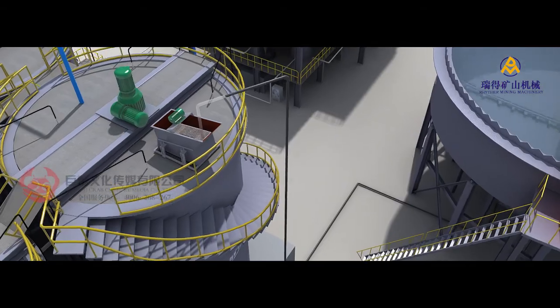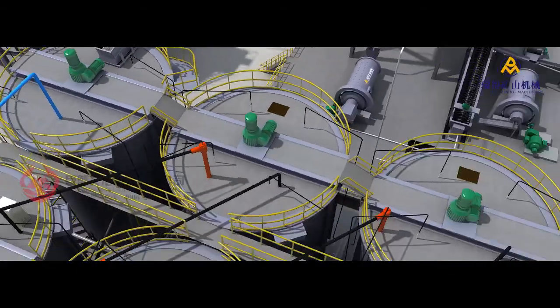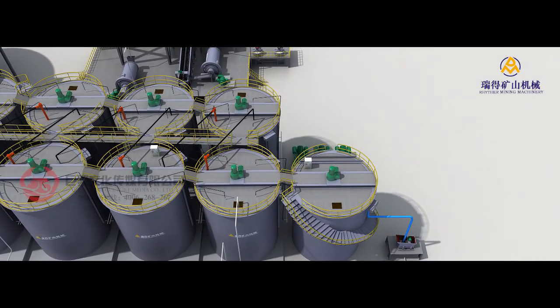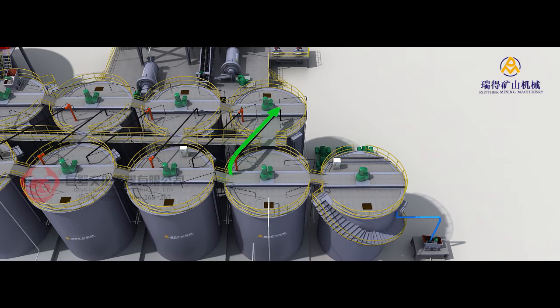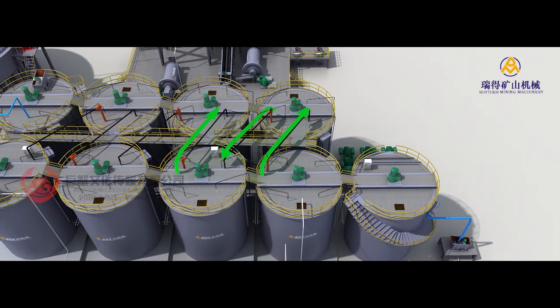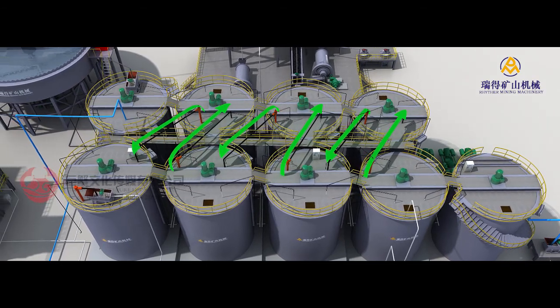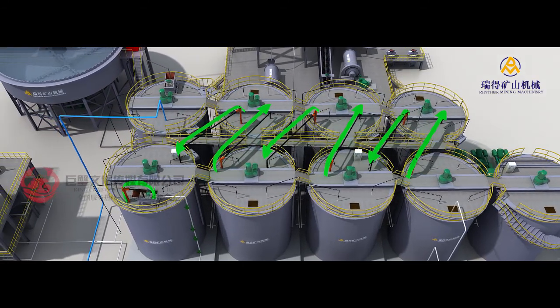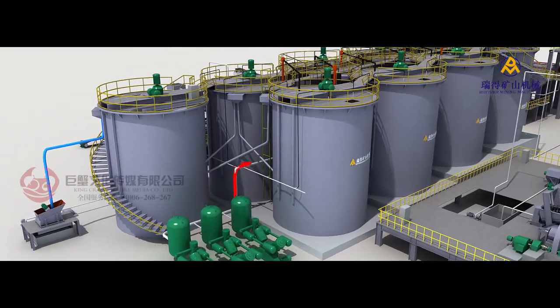After second removal of rejects, the pulp will enter into pre-leaching tank. Active carbon will be added into the last carbon leaching tank and brought to previous carbon leaching tank by air lifter. Saturated gold loaded carbon will be transferred to desorption and electrolysis workshop from the second leaching tank through screen.